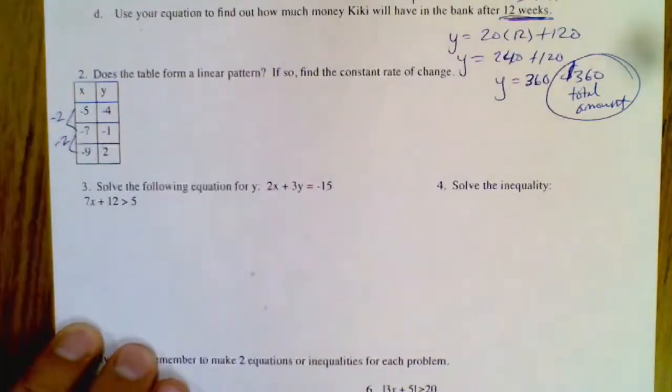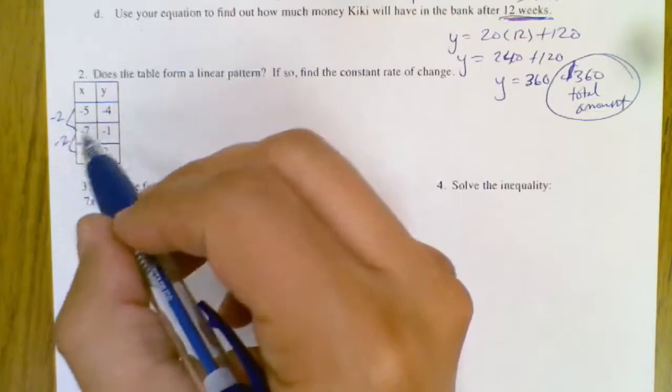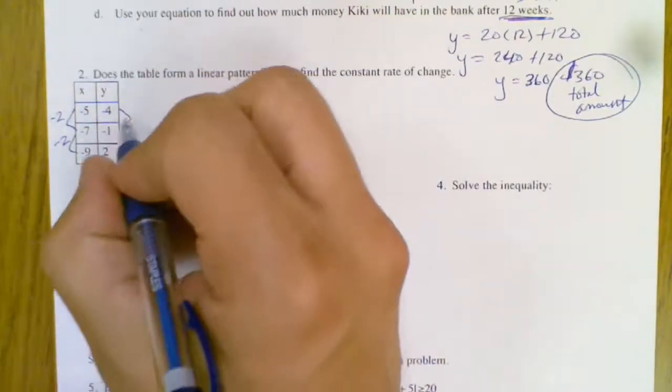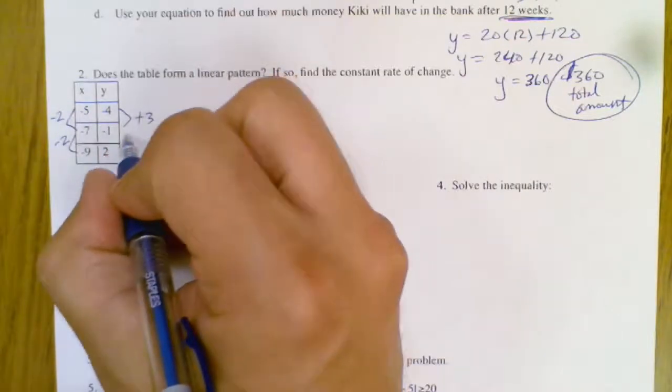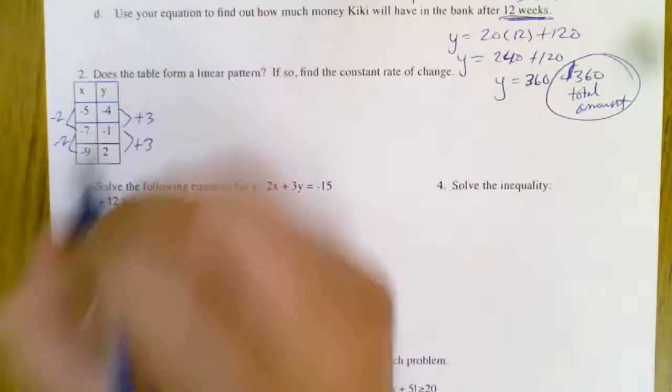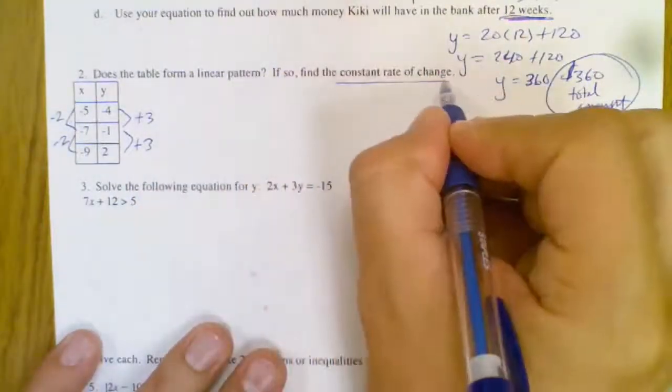Now if those weren't the same then you can't really even tell, but since they are the same and this is going up by 3, be careful on that because it's actually gaining since it's getting less negative.